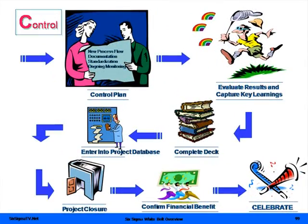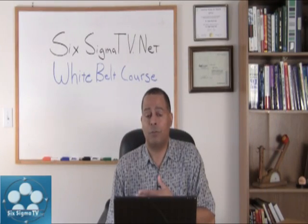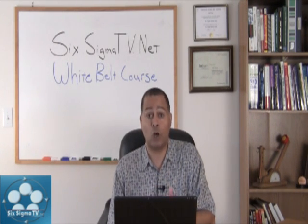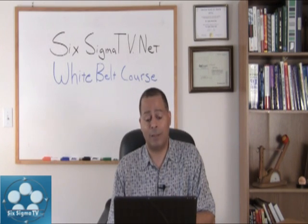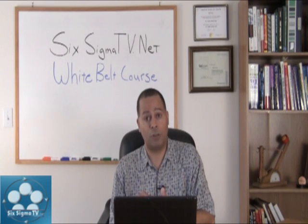So you have your new processes documented, you evaluate the results of your learnings and your pilot, you complete any standard operating procedures, you publish those, you confirm your financial benefits, you run that by your division financial officer to validate your hard savings and soft savings from the project. That way they'll know that it's in the books, it's on the general ledger, and that's what you want with your hard savings.